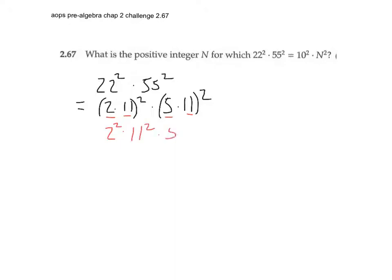squared times 5 squared times 11 squared. And then we say, well let's rearrange it, so we'll put 2 times 5 and 2 times 5